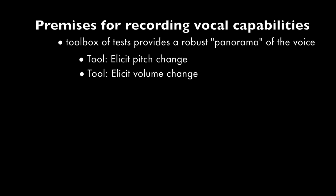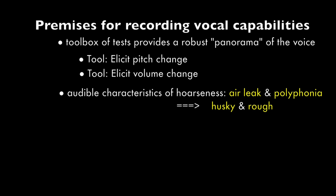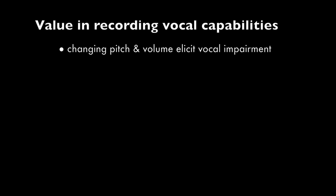By changing pitch and volume while recording, you can completely assess the voice. The examiner or any future listener of the recording can identify the typical characteristics of hoarseness, air leak, and diplophonia or polyphonia. Specific vocal tasks can generate other types of vibratory impairment. By altering the two main capabilities of the larynx — changing pitch and changing volume — the examiner can also elicit a vocal impairment when one is not heard during standard speech.